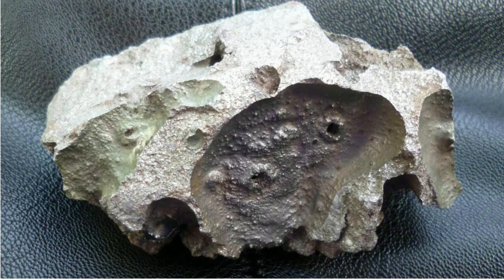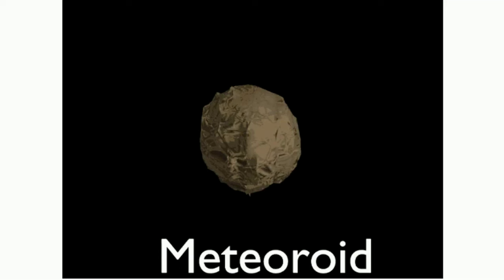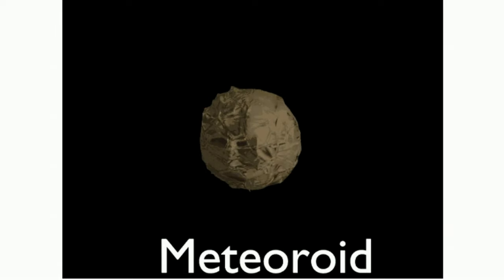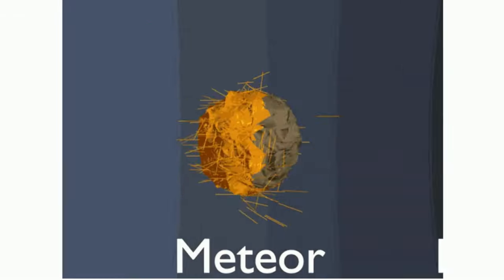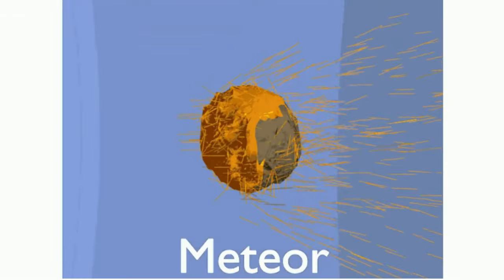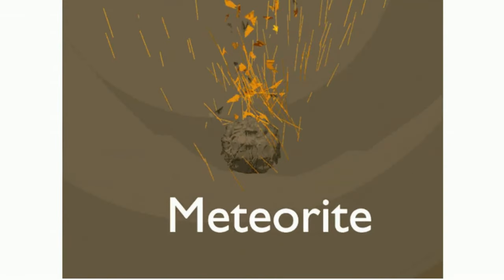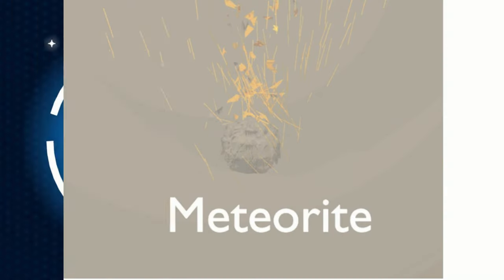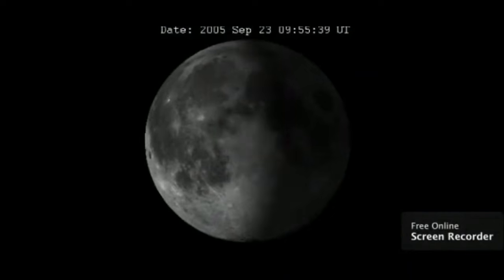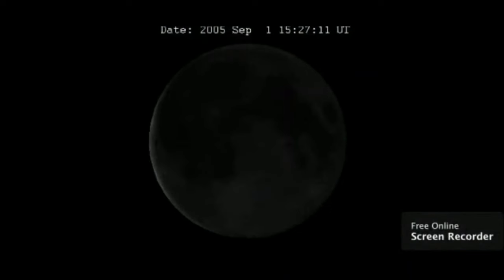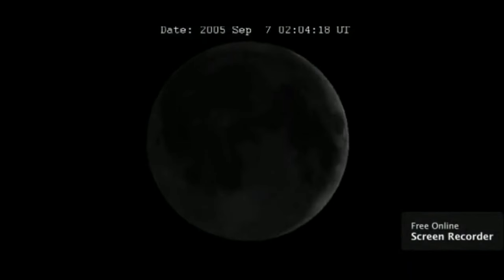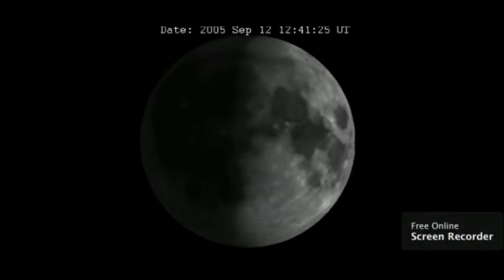Here is the sequence: you have a meteoroid in space, and when it enters the atmosphere it is a meteor, and when it strikes the Earth it is a meteorite. As the Moon revolves around the Earth, its appearance changes and cycles through eight different phases.